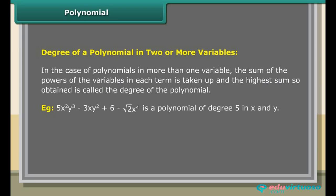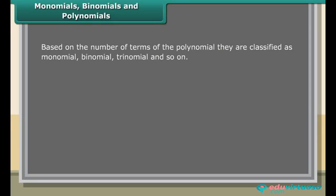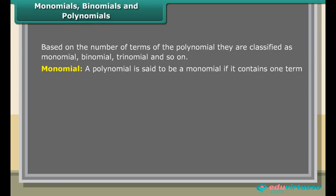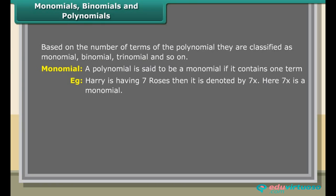Example: 5x²y³ − 3xy² + 6 − √2·x⁴ is a polynomial of degree 5 in x and y. Based on the number of terms, polynomials are classified as monomial, binomial, trinomial, and so on. A polynomial is said to be a monomial if it contains one term.